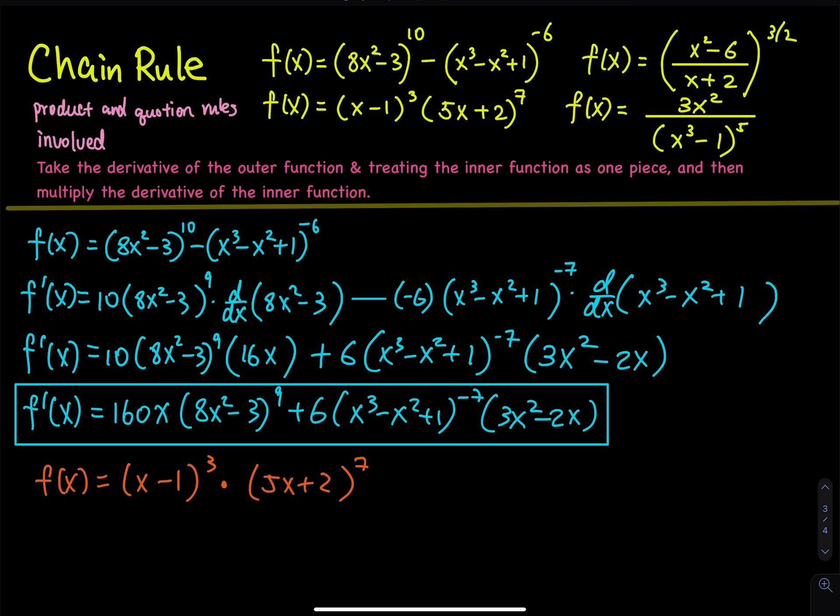So we already know there is a product rule. But for each factor — the first one has a linear function x minus 1 inside a third power. In the second factor, you have another linear function 5x plus 2 inside a seventh power. So that means within the product rule, you have a chain rule.